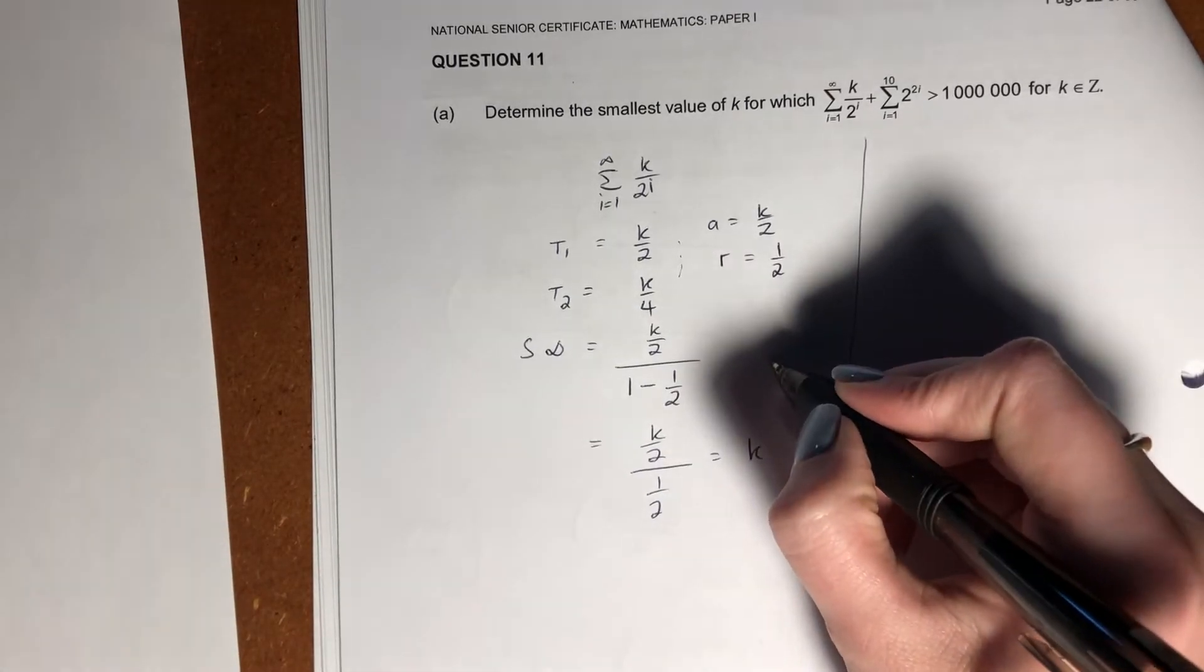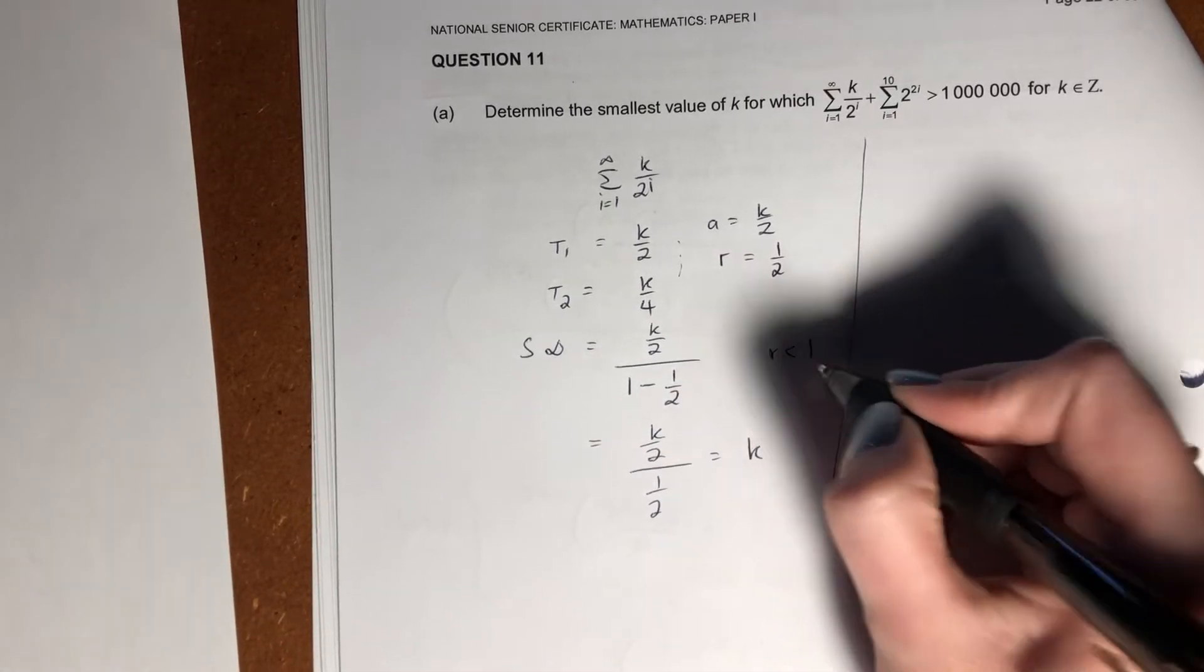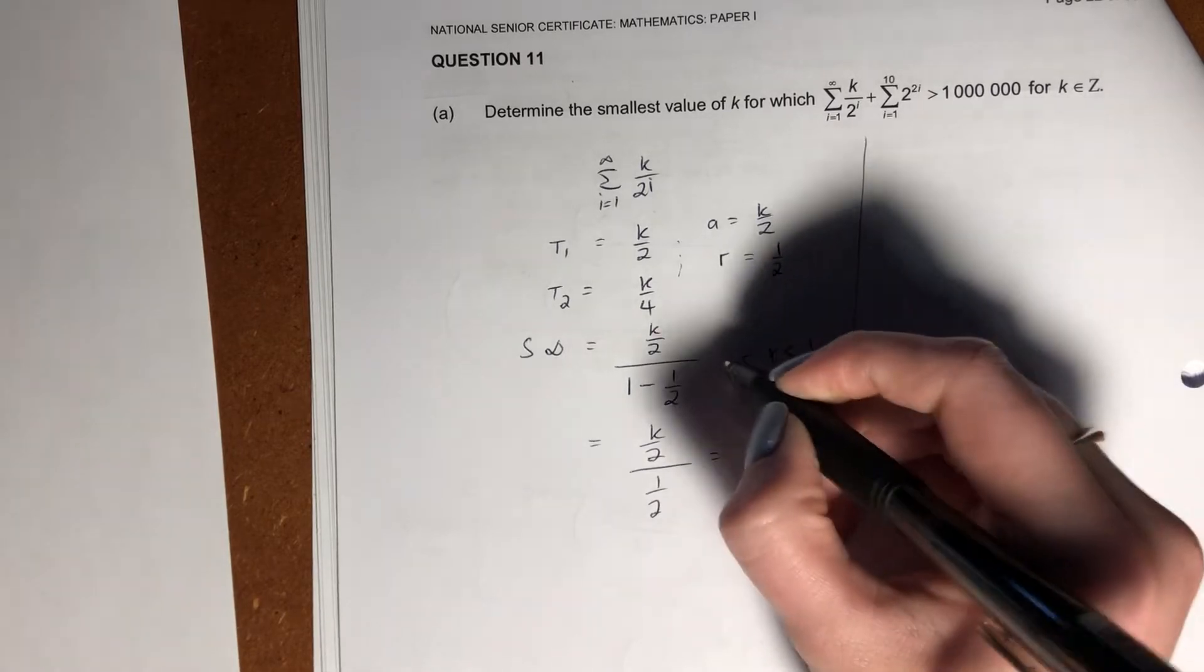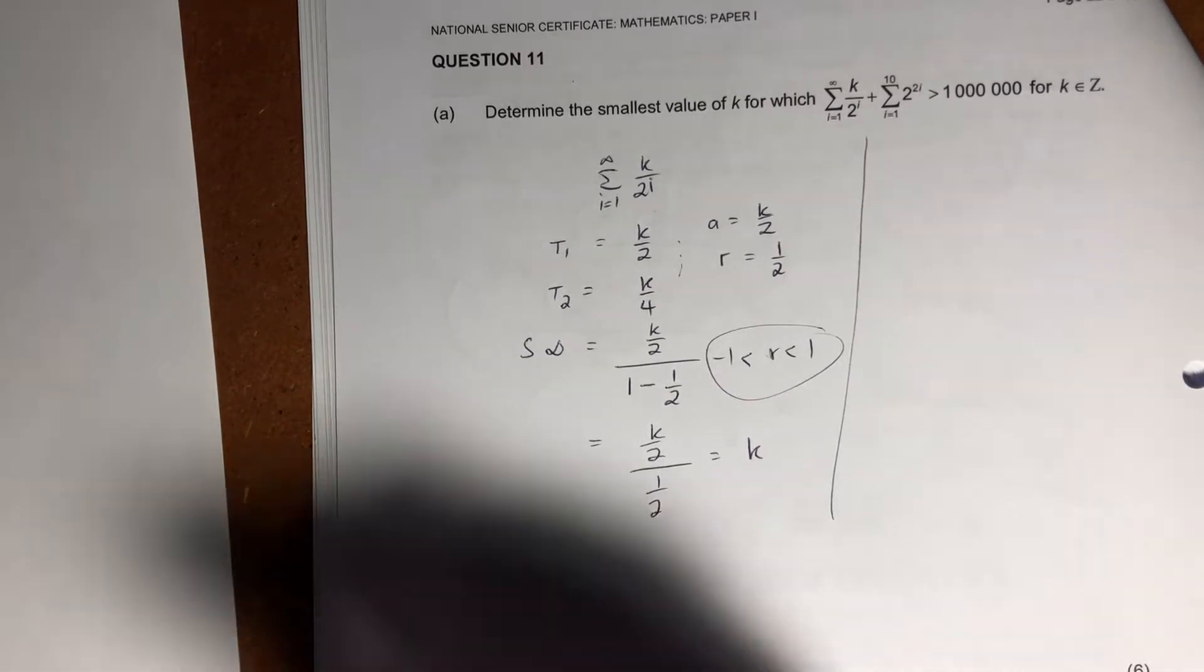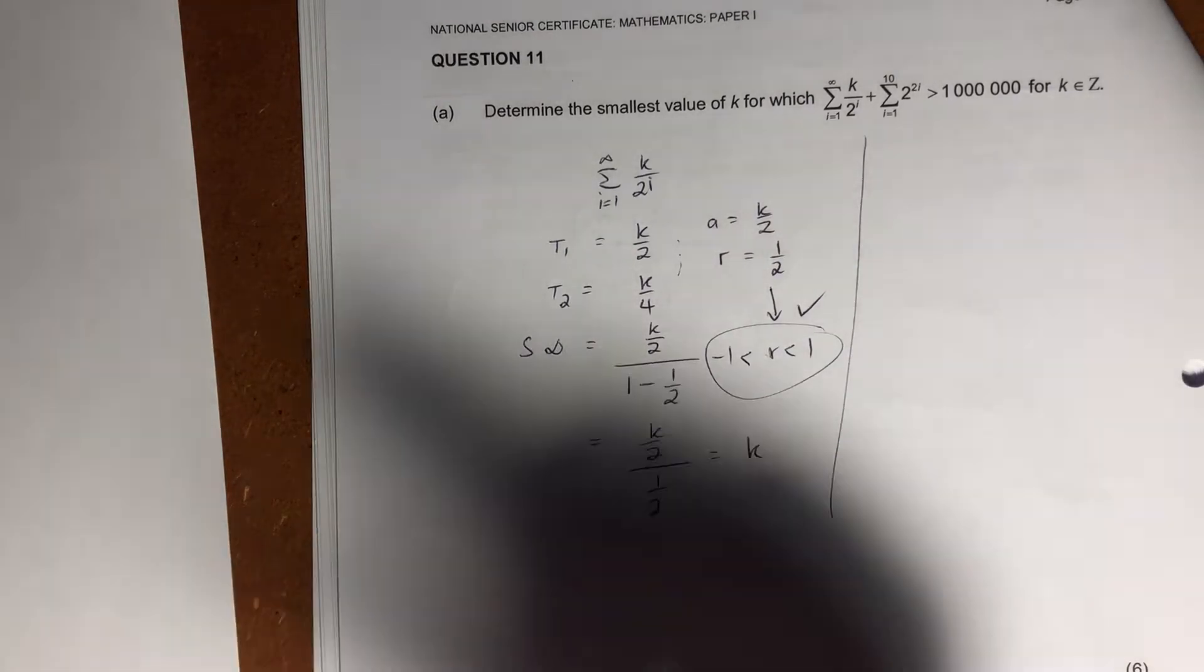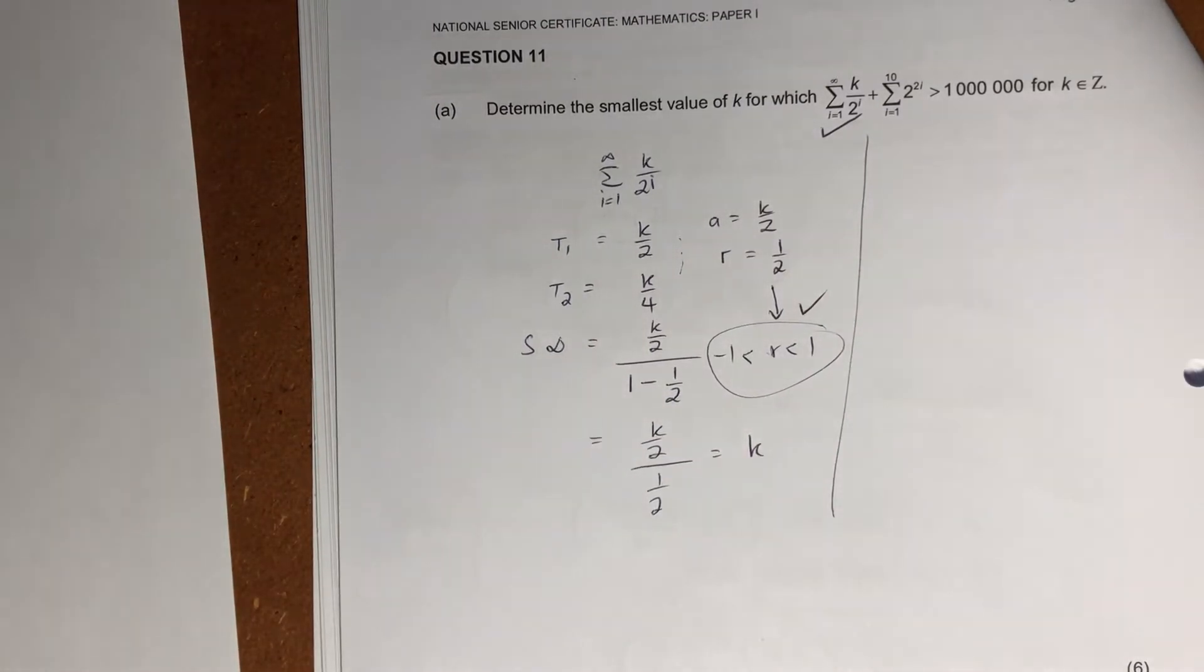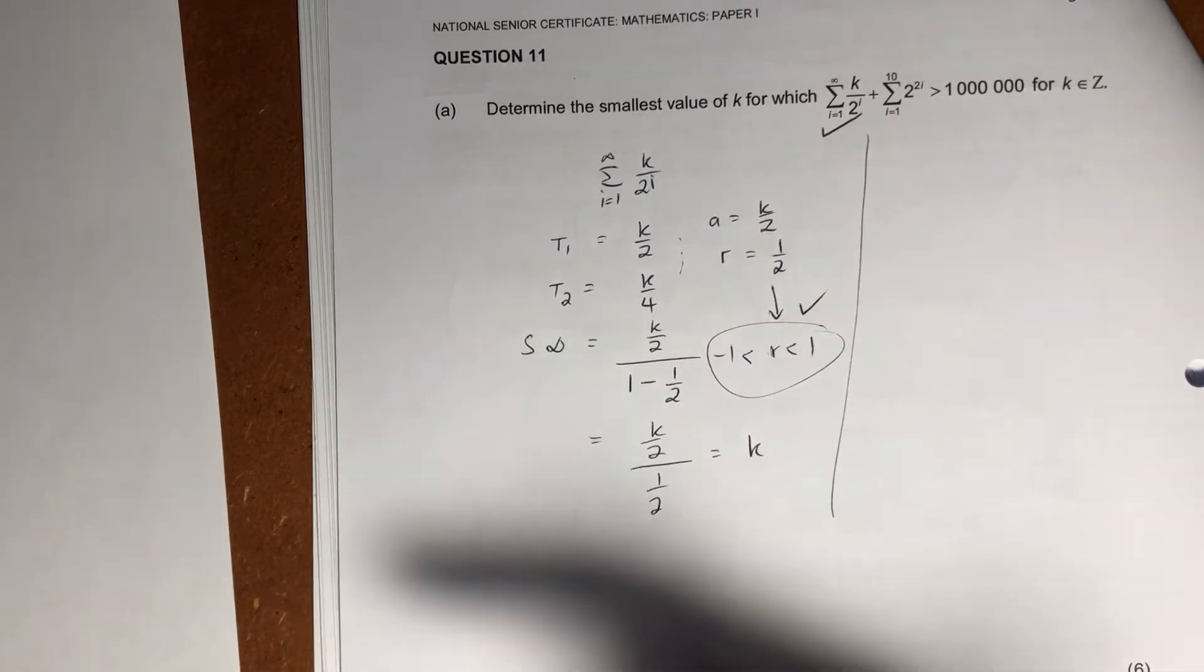Over here, it's important that when we sum to infinity, you need to make sure that your r value is between negative 1 and 1, which is the case for us, so no problem. So we sorted out this first sigma. Sigma just means the sum of.